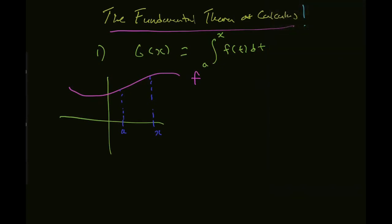What g is doing is it's taking in x as its argument — this x here — and its output is going to be the area under the curve of f in between a and x. That's what g does. It's a function that takes in the x and puts out the area under the curve. And a is just some point less than x where we start the integration.